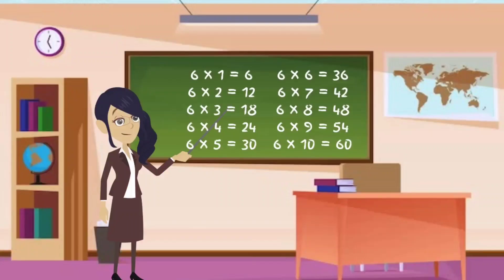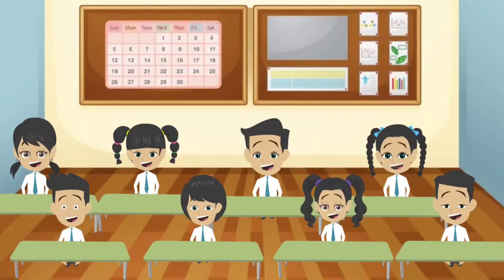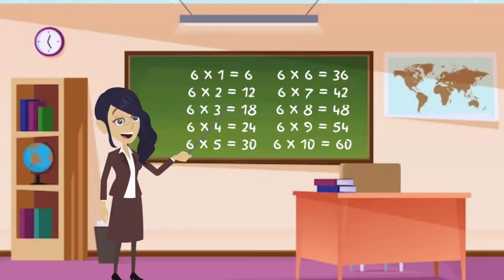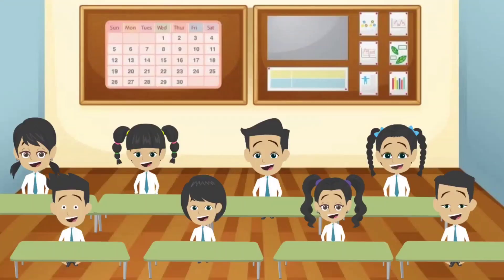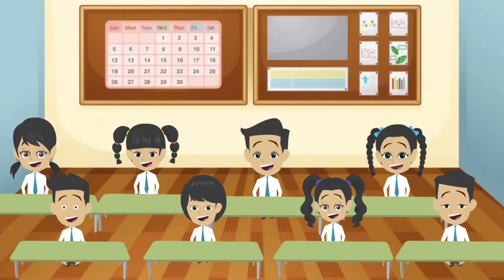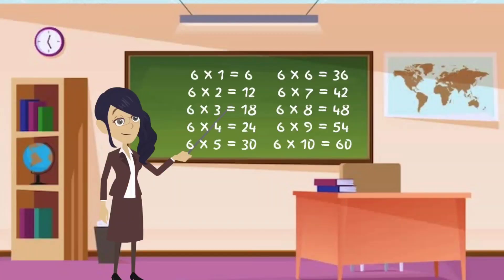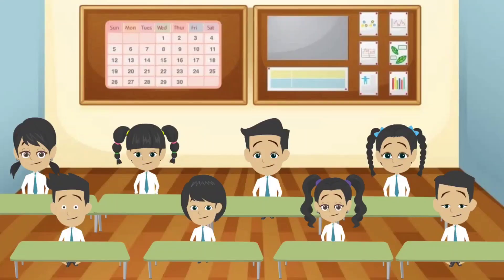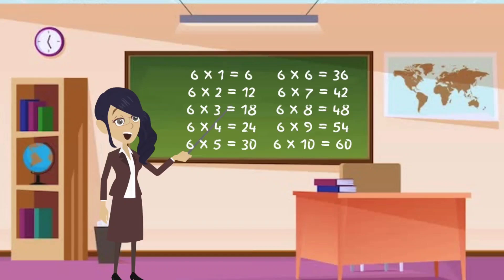6 6s are 36. 6 6s are 36. 6 7s are 42. 6 7s are 42. 6 8s are 48. 6 8s are 48. 6 9s are 54. 6 9s are 54. 6 10s are 60.